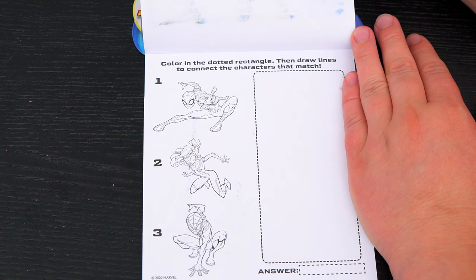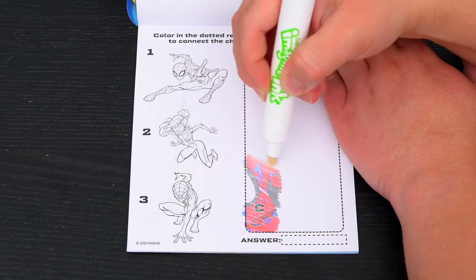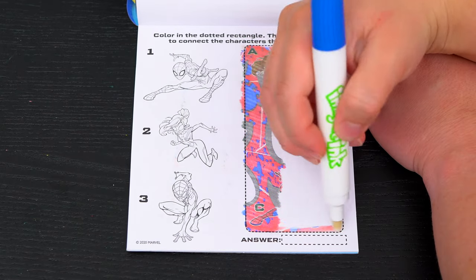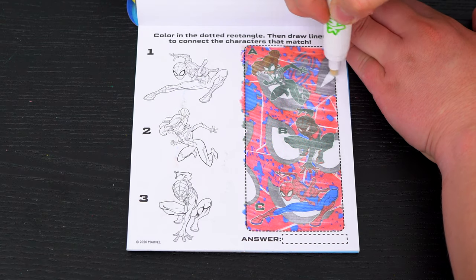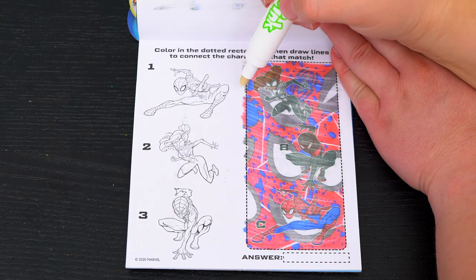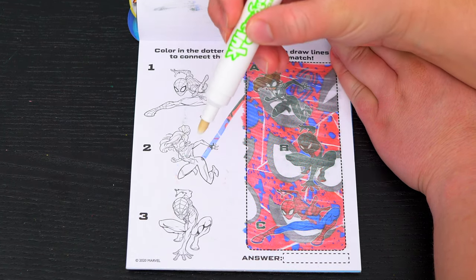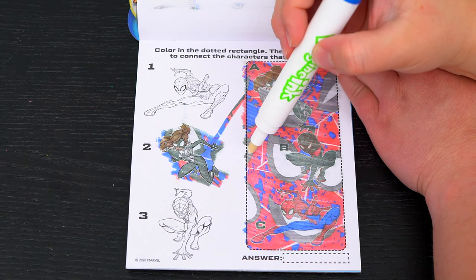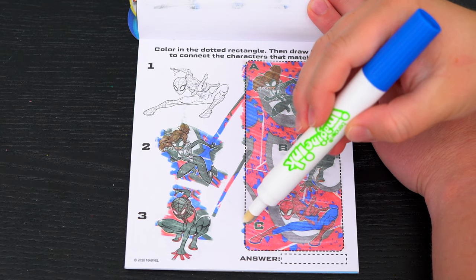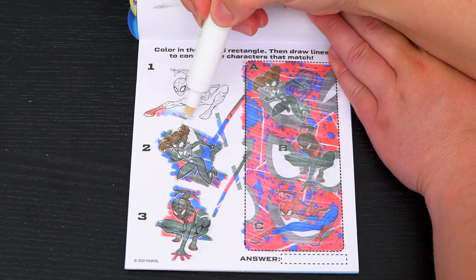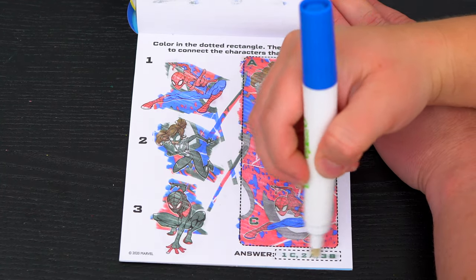Color in the dotted rectangle, then draw lines to connect the characters that match. Okay, so A matches with number two down here, and B matches with number three, and then C matches with number one. Alright!